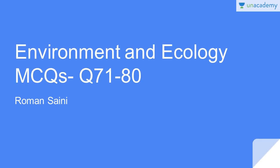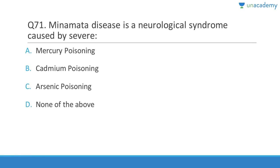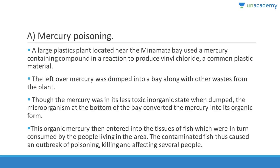Let us discuss Environment and Ecology MCQs, questions 71 to 80. Minamata disease is the neurological syndrome caused by severe mercury poisoning. It is not common, but in a city called Minamata in Japan it was widespread. A large plastic plant near Minamata Bay used a mercury-containing compound to produce vinyl chloride, and the leftover mercury was dumped into the bay.